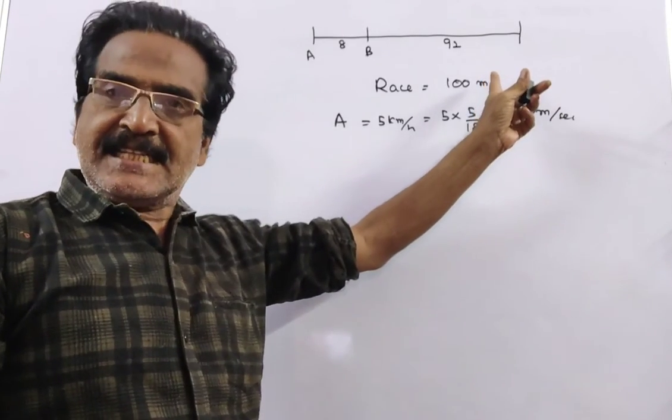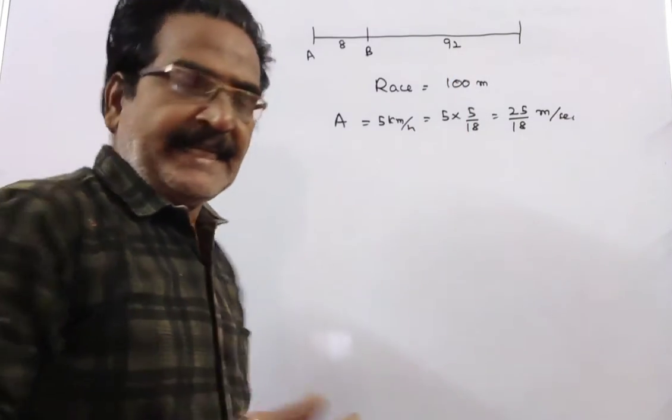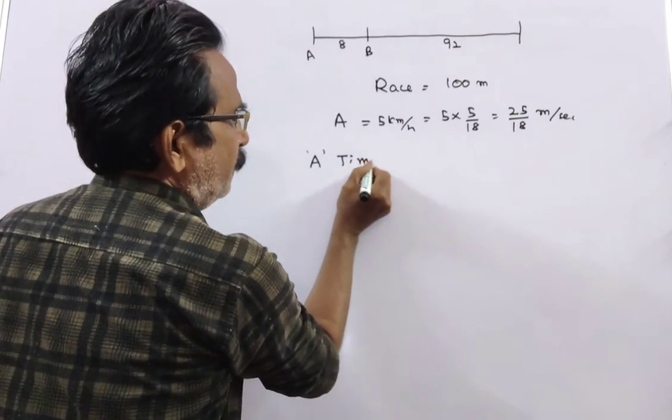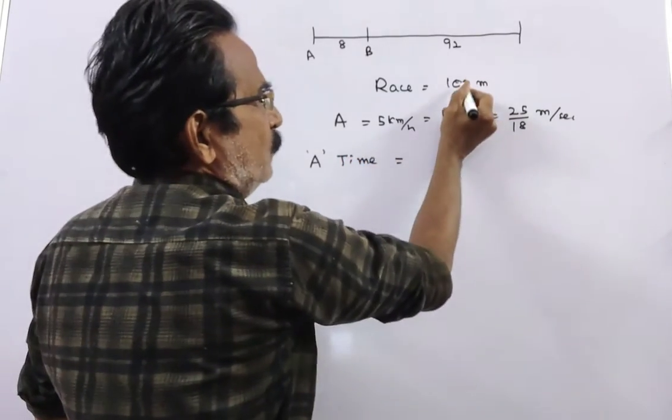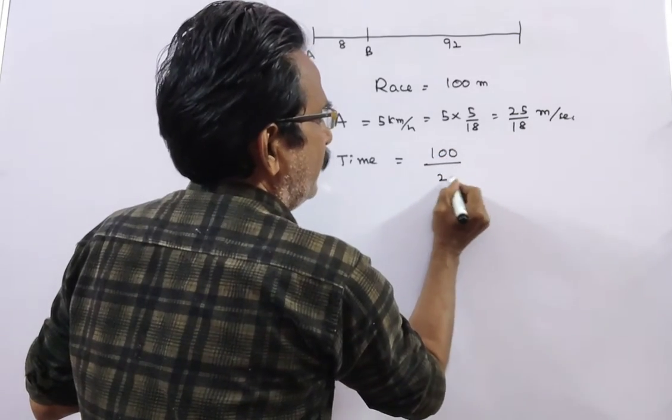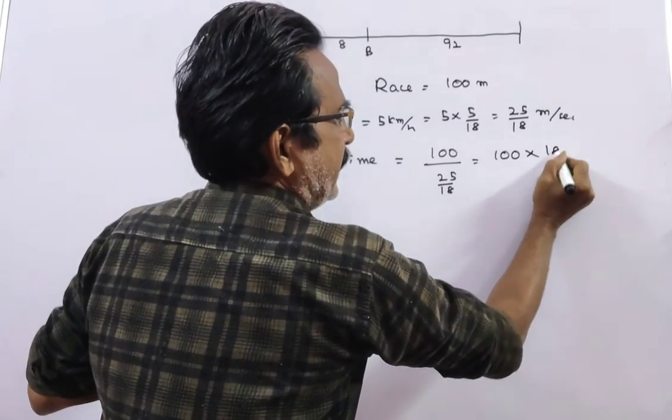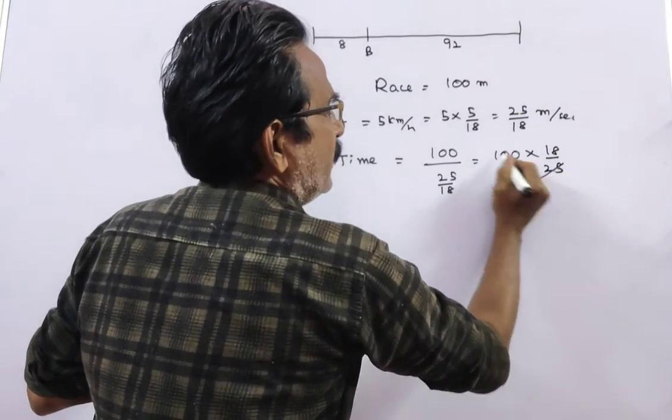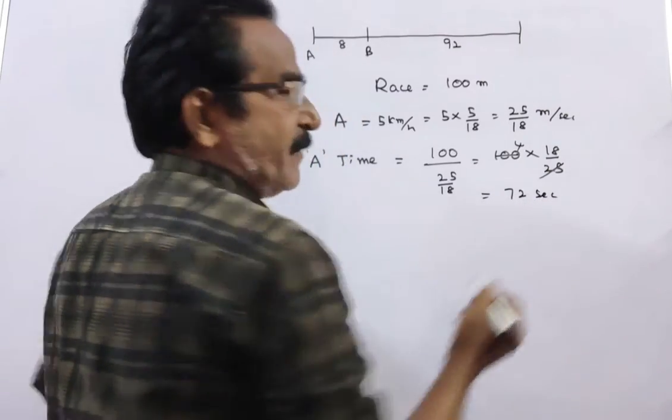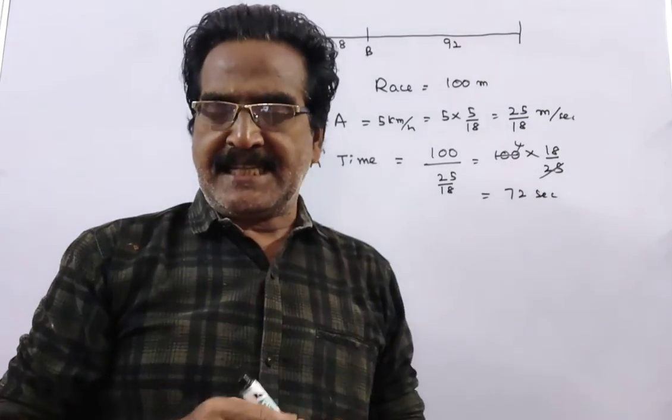This is the distance he covered. So here the time taken by A. A's time to finish the race is equal to distance by velocity, 100 by 25 by 18. That comes to 100 into 18 by 25. 25 goes into 18 is 72 seconds. Friends, A takes 72 seconds to finish the race.